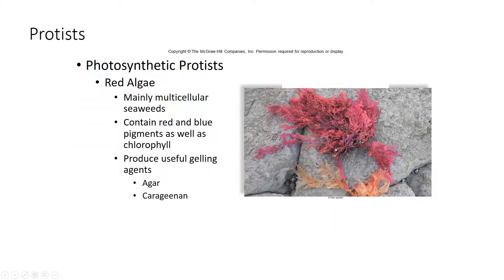Photosynthetic protists also include red algae, which are mainly seaweeds. They have red and blue pigments and chlorophyll. They produce gelling agents like agar, which is used in microbiology lab to grow cultures of bacteria. We also have carrageenan, which is a polysaccharide used as a thickener or stabilizer that you find in almond milk or coconut milk. It's been used for a long time in food preparation because carrageenan has really good gelling properties.